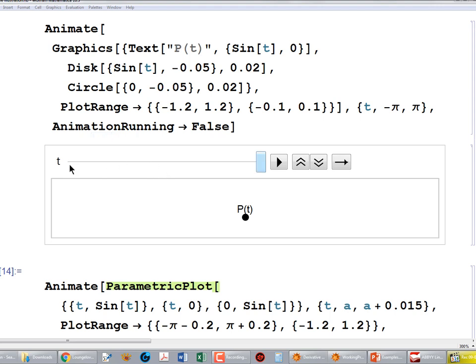This T stands for time, P(T) stands for the position of a point at time T, and the initial point is right here. Let me start from the beginning.